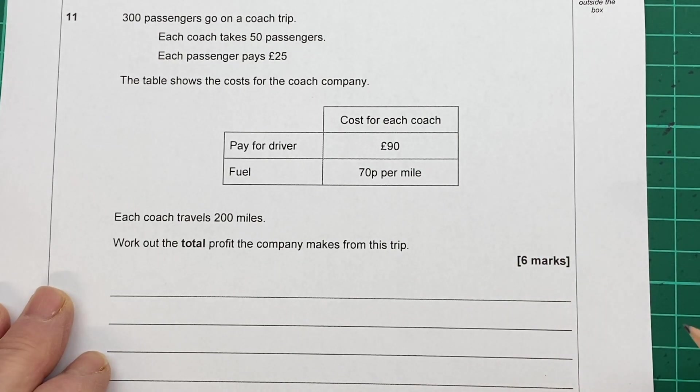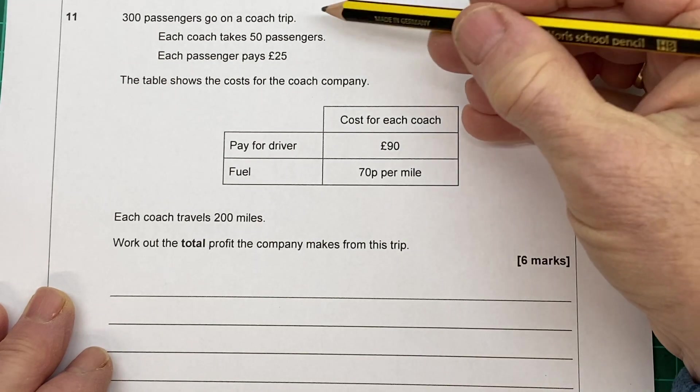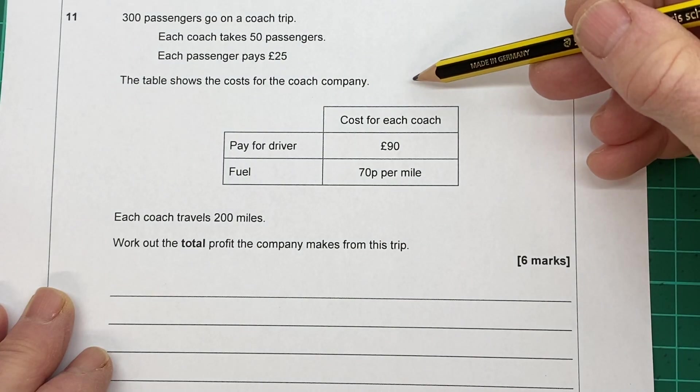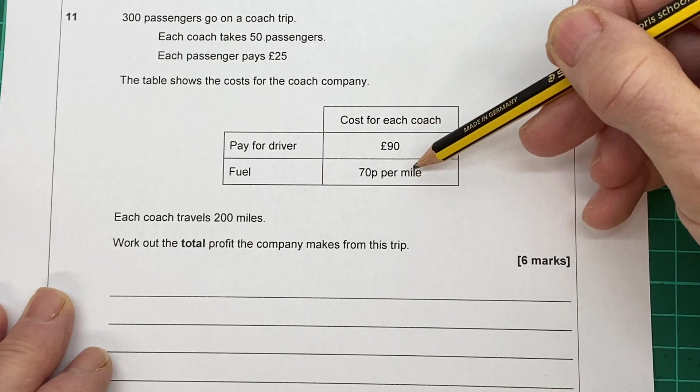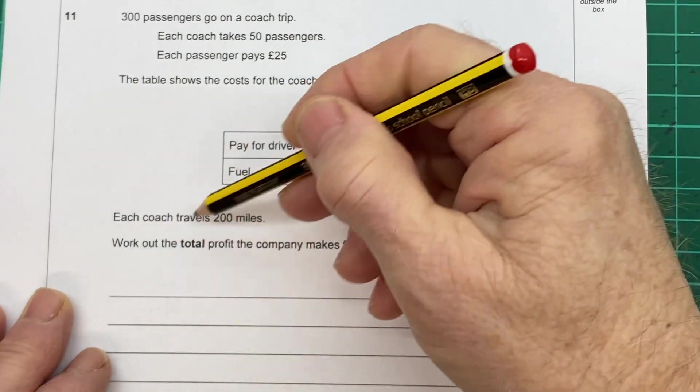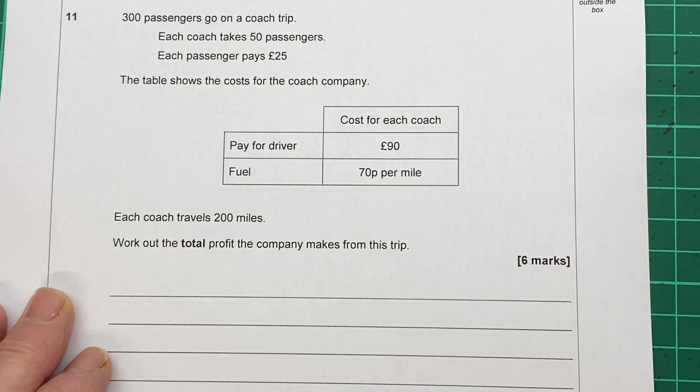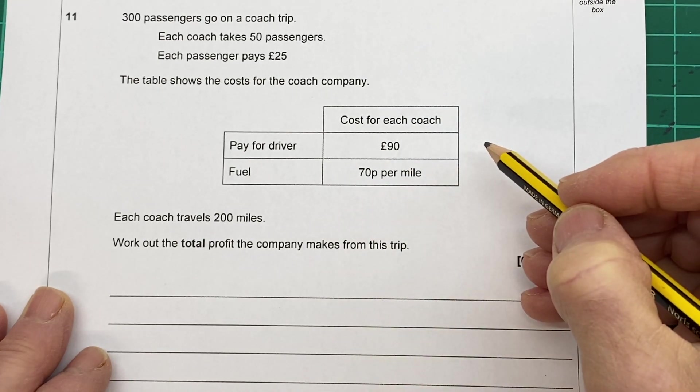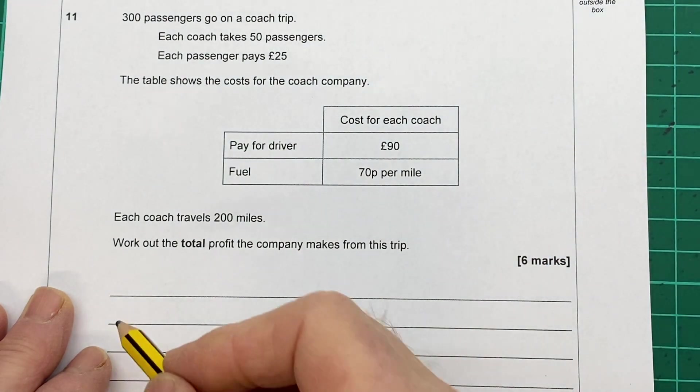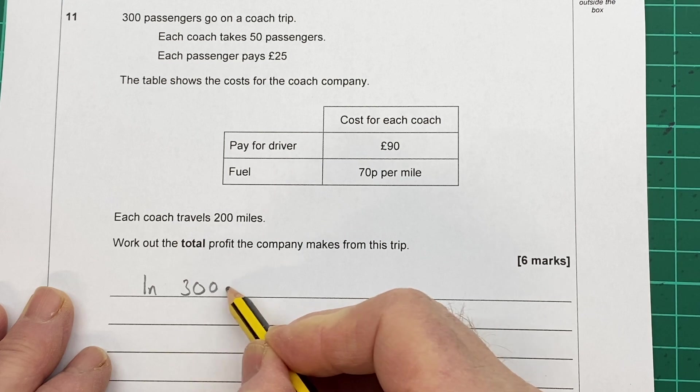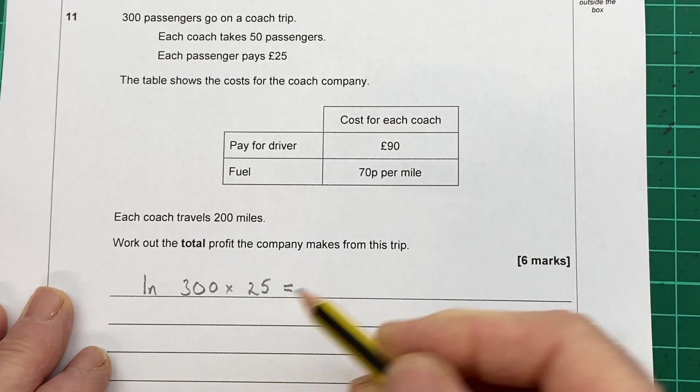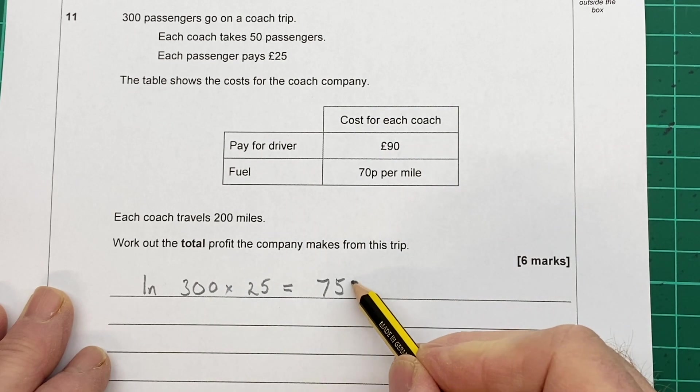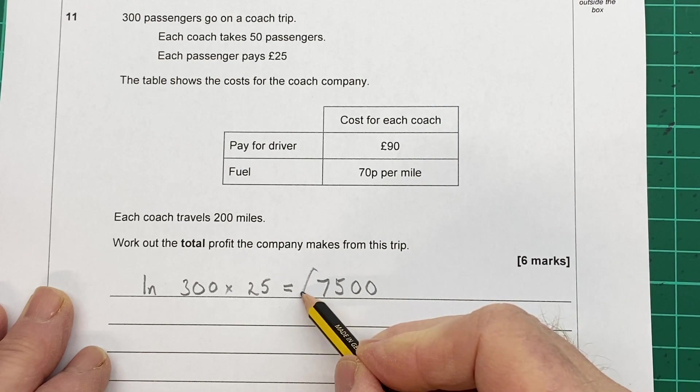Question eleven. Now this is a six mark question. So there's going to be a lot of processes involved here, I suspect. Three hundred passengers go on a coach trip. Each coach takes fifty passengers. Each passenger pays twenty-five pounds. The table shows the costs for the coach company. So ninety pound to pay for the driver for each coach, and seventy p per mile for fuel for each coach. And each coach travels two hundred miles. Work out the total profit the company makes from this trip. Now profit is what comes in minus what goes out. So income minus expenditure. So what's coming in? There are three hundred passengers each paying twenty-five pounds. So that's the in, is three hundred lots of twenty-five pounds. Now you may recognise that three twenty-fives are seventy-five. So we know we're going to have a seven and a five at the front. And then we're going to have two zeros. So three hundred times twenty-five, seven thousand five hundred pounds. Nice bit of income.